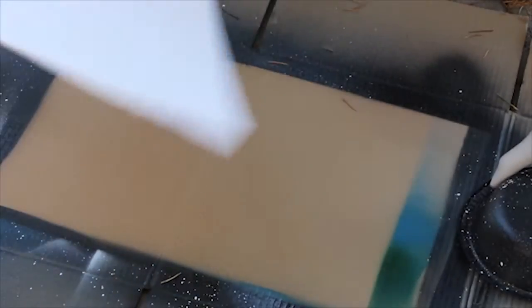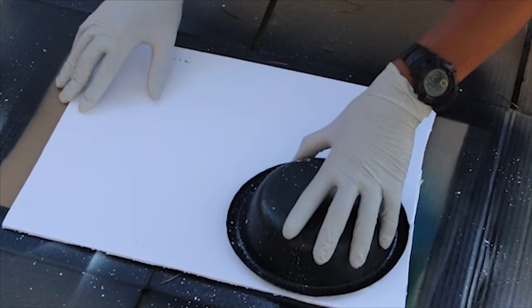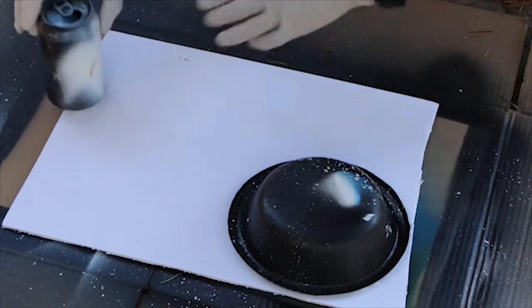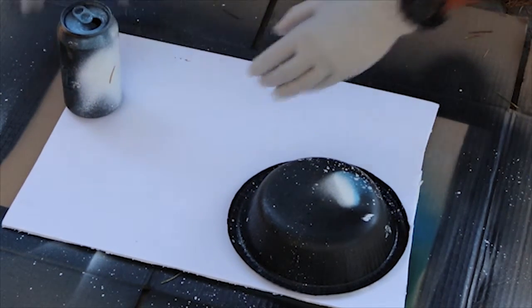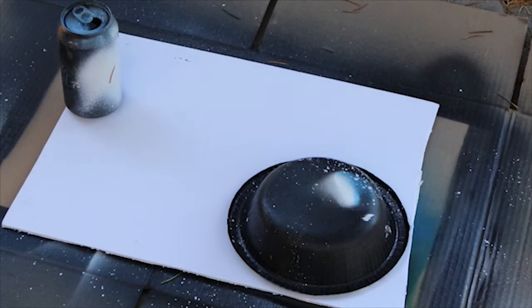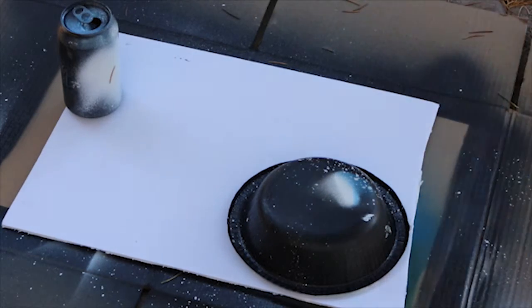To start, put your board on the ground, put your object on the board, and hit it with a thin layer of paint. It does not matter what color you use.